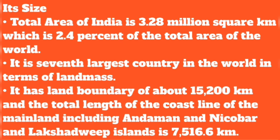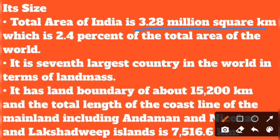Now we will look at India's size. India has an area of 3.28 million square kilometers. It occupies 2.4% of the world's total area. India is the 7th largest country in the world — the first largest is Russia. India's land boundary is 15,200 kilometers, and the coastline including Andaman and Lakshadweep islands is 7,516 kilometers.